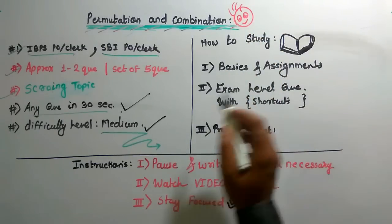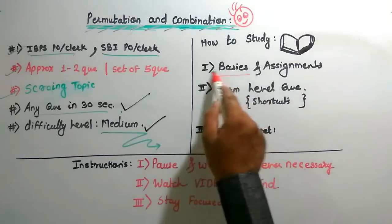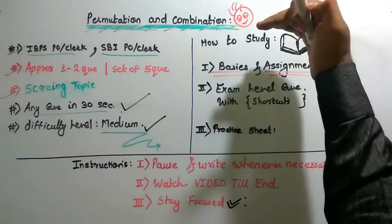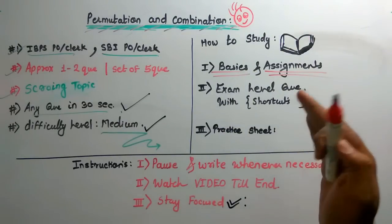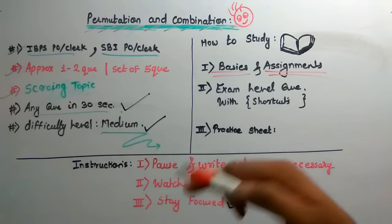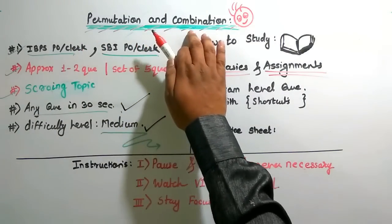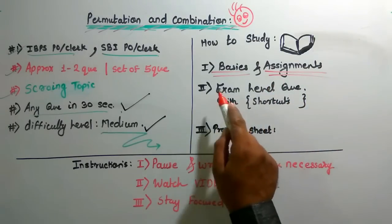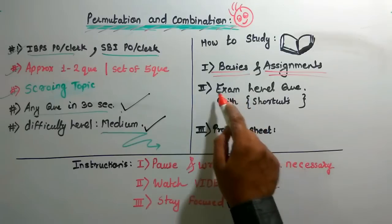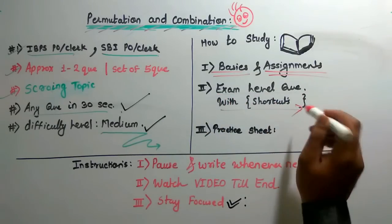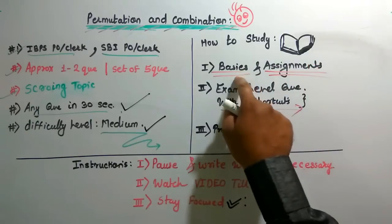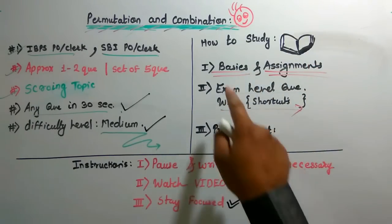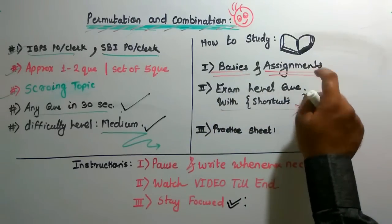How to study this chapter: there are some basics and assignments. What are the basics? Before starting the chapter, I will provide you some basic concepts — how to solve different types of questions, what are the types of questions, what is permutation, what is combination, and what are the different formulas involved. The second step is to solve exam-level questions, but you cannot touch those questions until you complete the basic assignment.